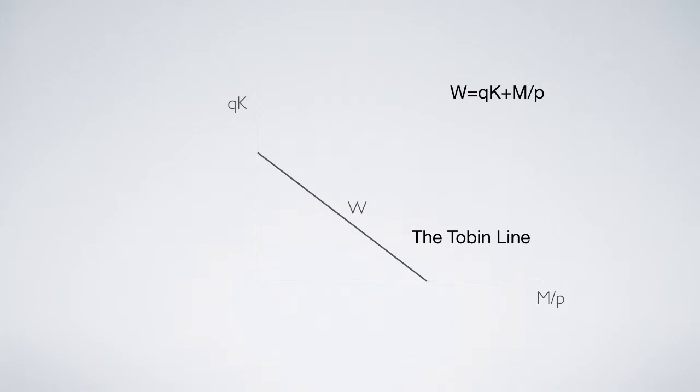This video solves Tobin's Q problem. This is Tobin's Q theory. He wanted to find the optimal combination of physical and monetary assets for his wealth.